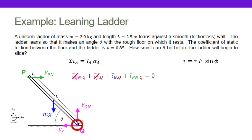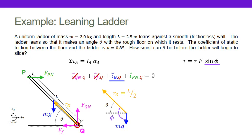I need to calculate the torque from gravity and the torque from the wall. For the torque from gravity, I want to calculate about point Q, so I need my position vector from point Q. I notice that the position vector has a length of half the length of the ladder — L over two — and the magnitude of the force is the weight of the ladder. I just need to figure out the angle between these two vectors.